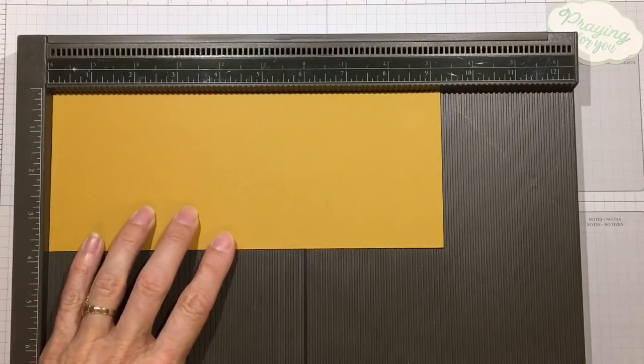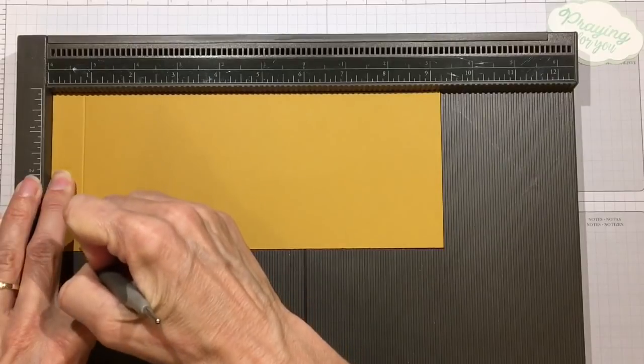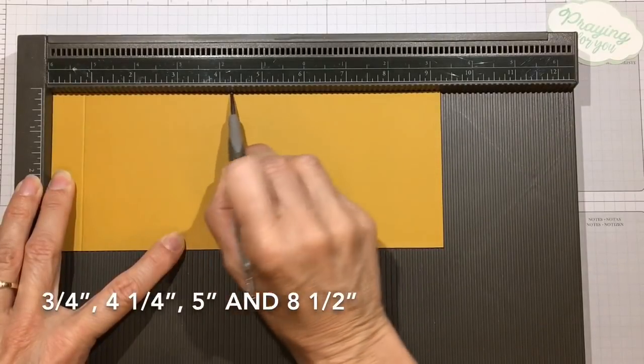Let's go ahead and get scoring. Score the long side at 3/4 of an inch, 4 and 1/4 of an inch, 5 inches, and 8 and 1/2 inches.